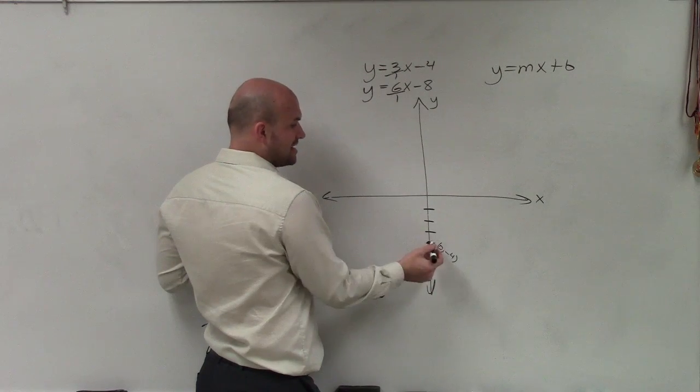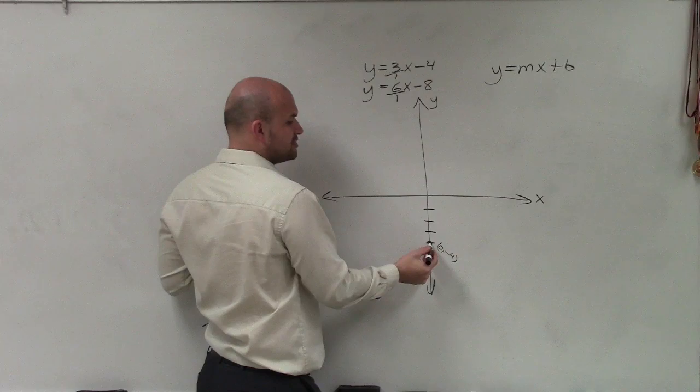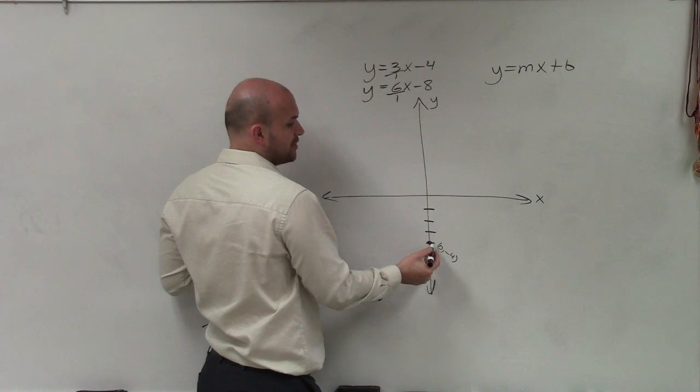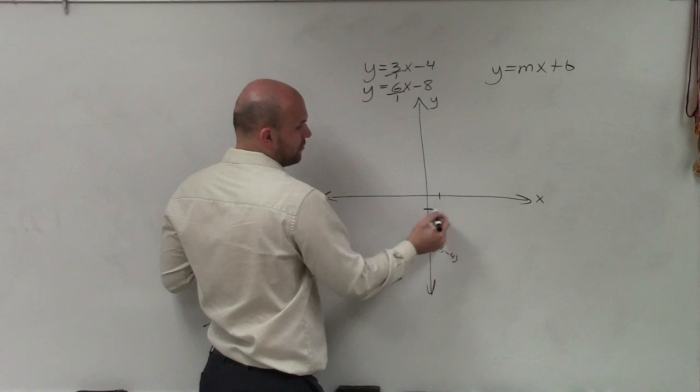So from my y-intercept, I'm going to use this slope, which is going to tell me to go up. The change in y is positive 3. That means I'm going to go up 3, 1, 2, 3, and then over 1.